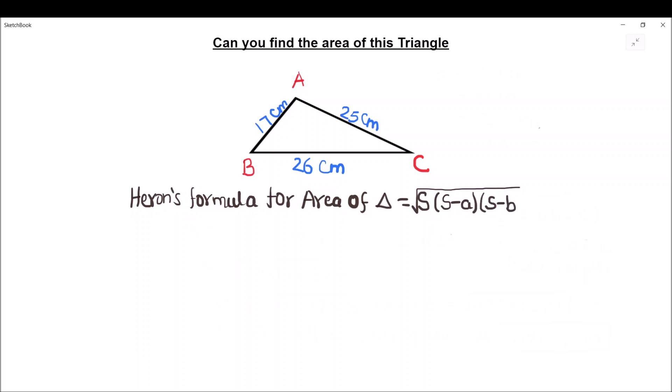Where s is the semi-perimeter of the triangle and it is equal to (a plus b plus c) divided by 2, and a, b, c are the side lengths of the triangle.